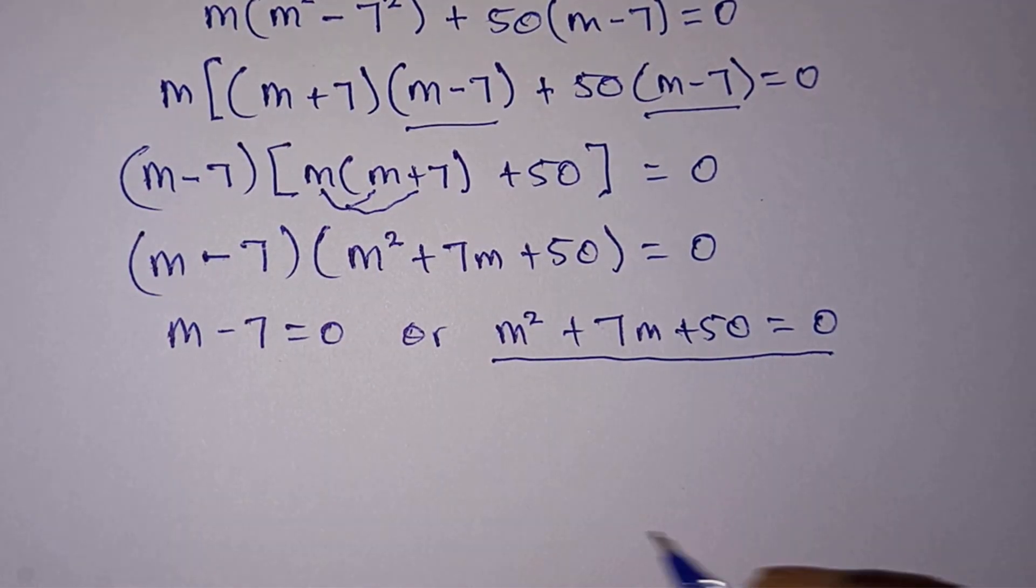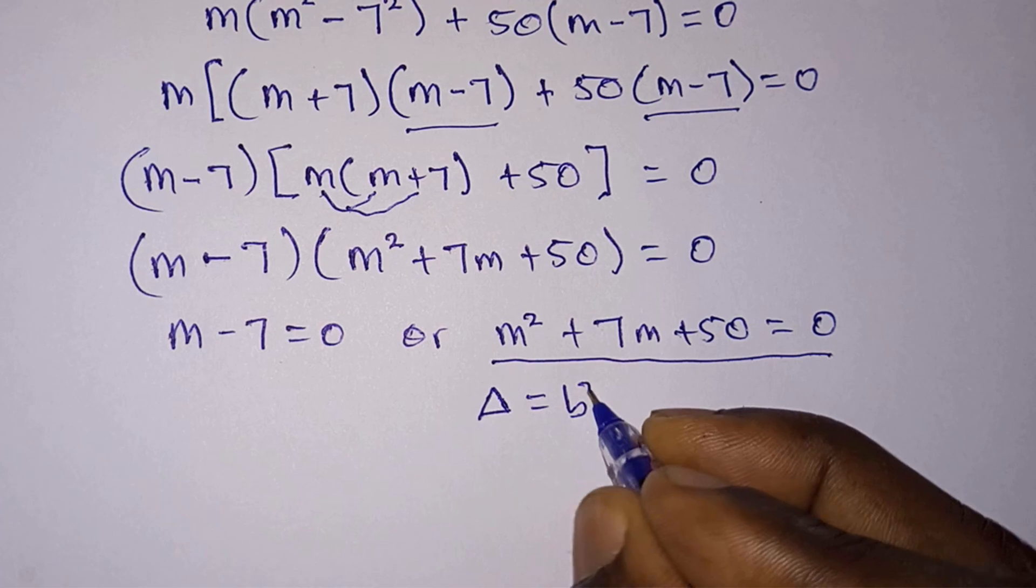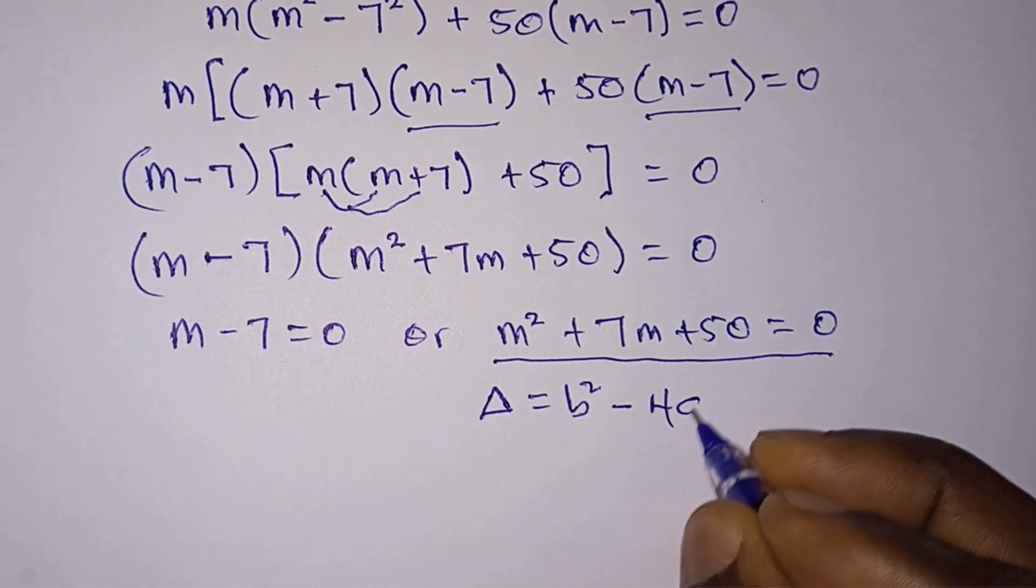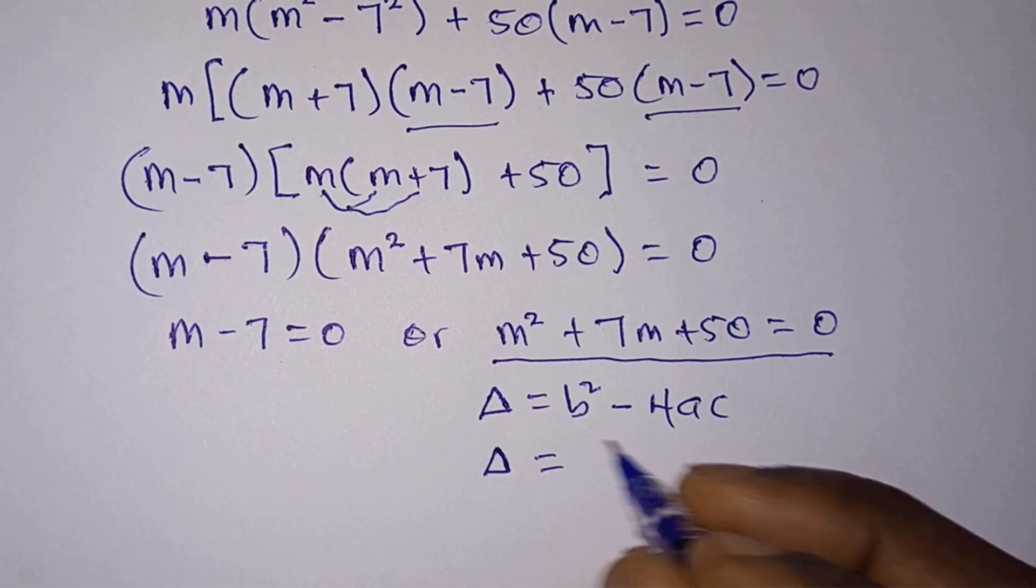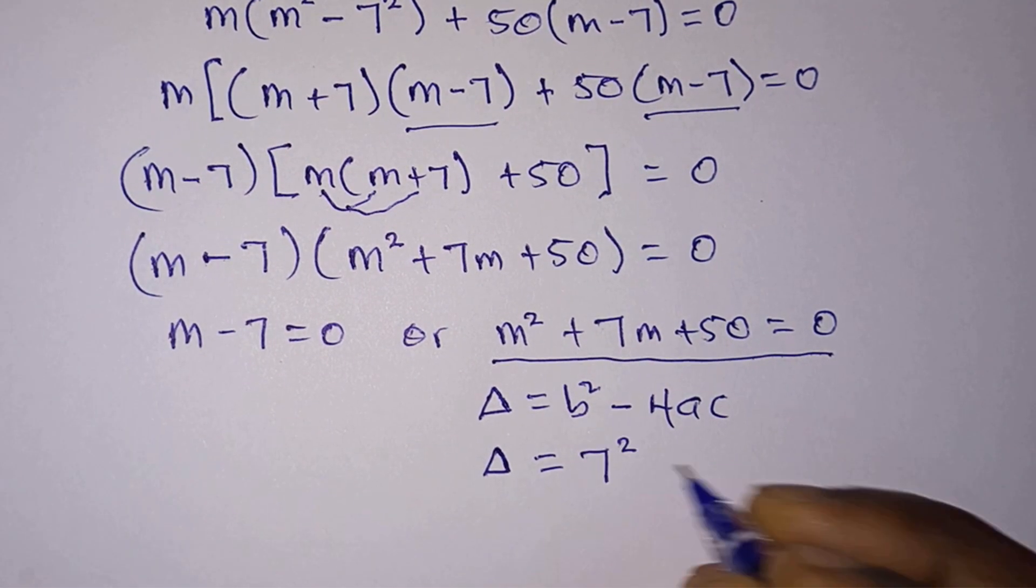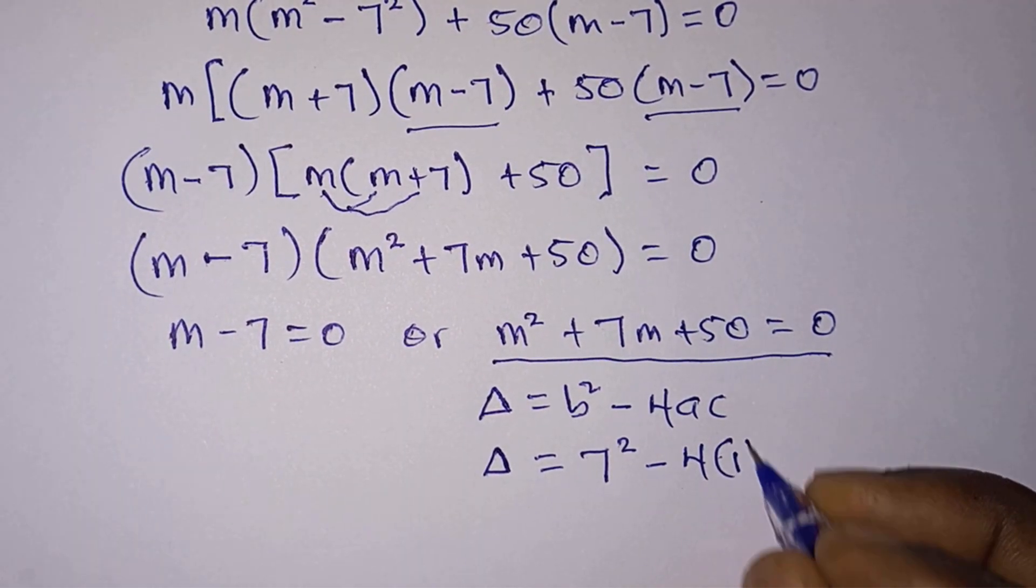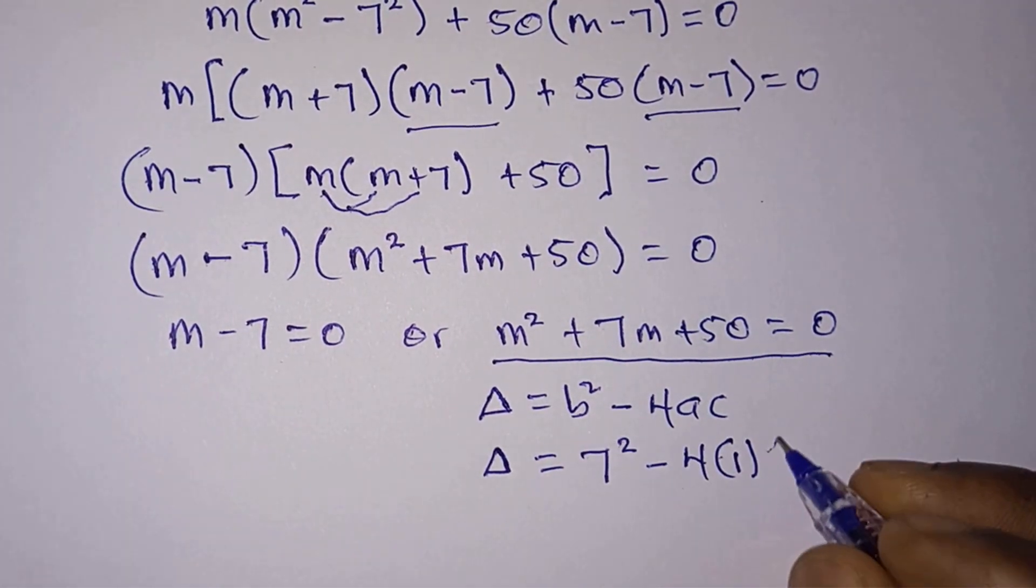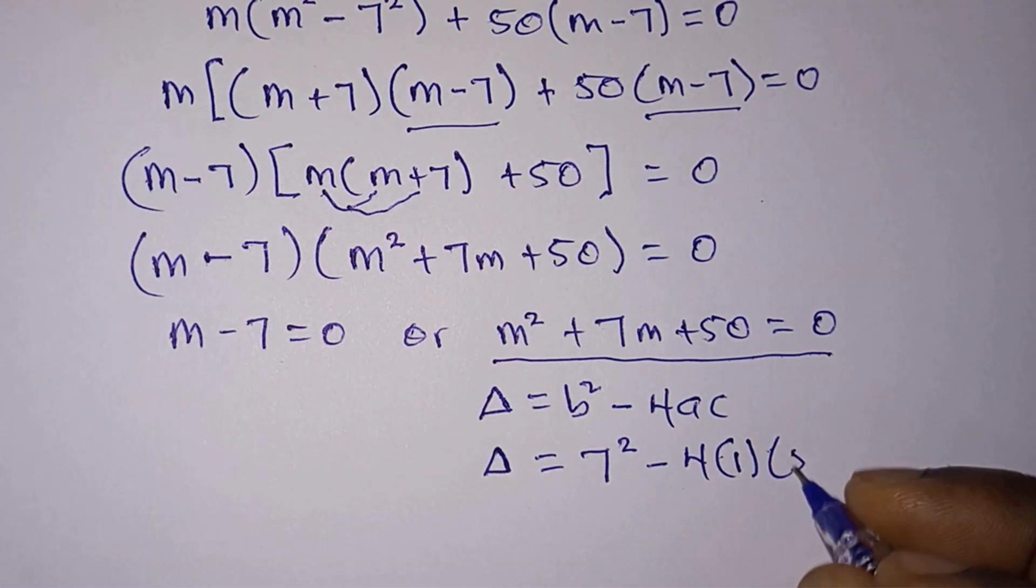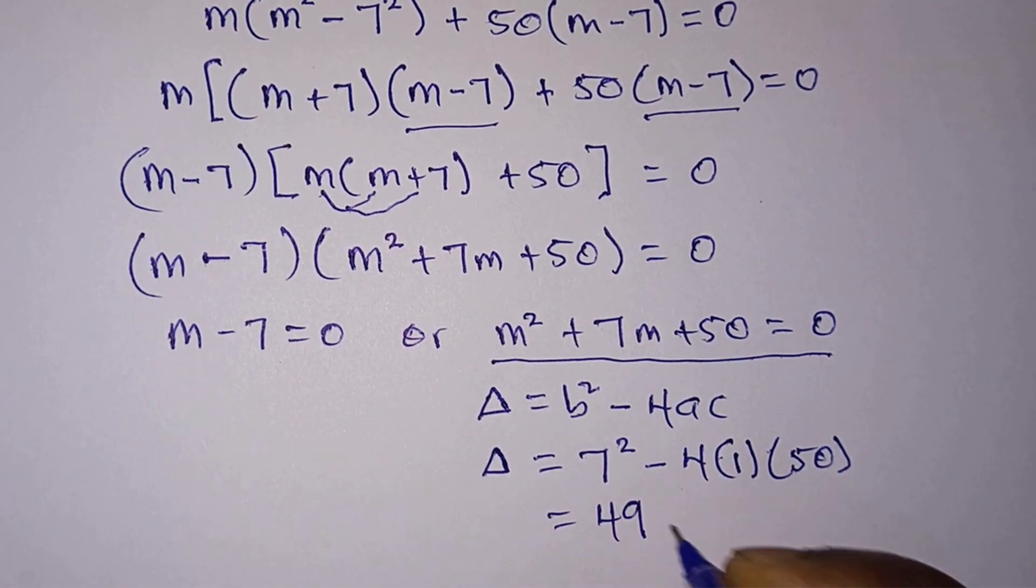From here we need to use the discriminant formula, which is delta equals b squared minus 4ac. So we know that b is the coefficient of m, so you have 7 squared minus 4 times 1, where 1 is the coefficient of m squared, times c being the constant, so we have 50 here.